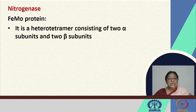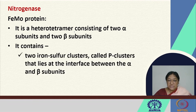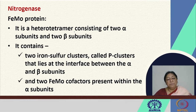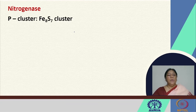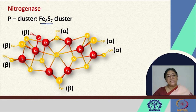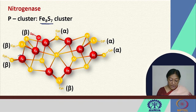The FeMo protein is a heterotetramer that contains two alpha subunits and two beta subunits. It contains two iron sulfur clusters called P clusters that lie at the interface of the alpha and beta subunits, and the two FeMo cofactors are present within these alpha subunits. The P cluster is a cluster of Fe8S7. Counting the iron atoms gives 8, and counting the sulfur atoms not associated with the polypeptide chain gives 7, making this an Fe8S7 cluster.